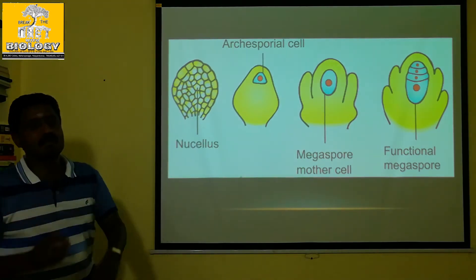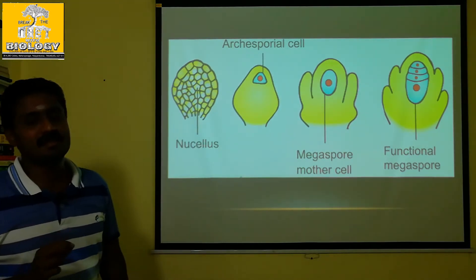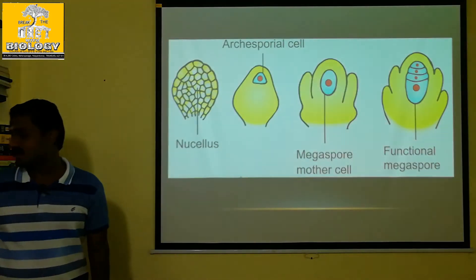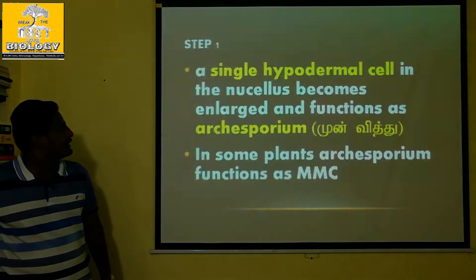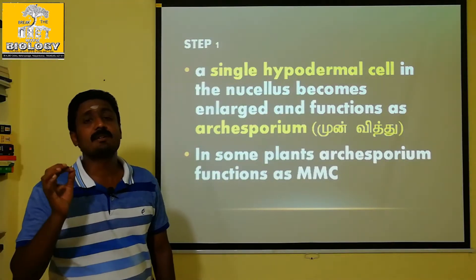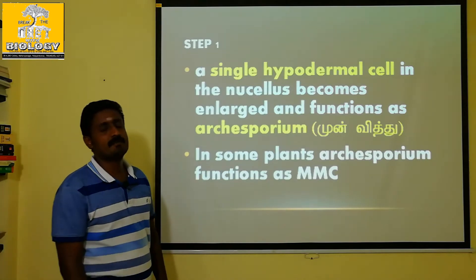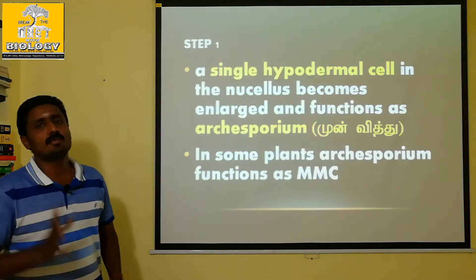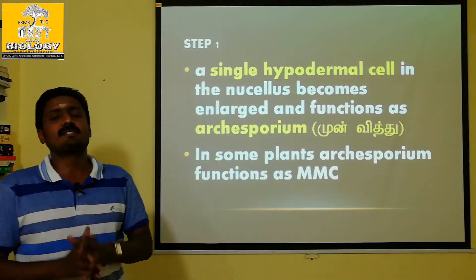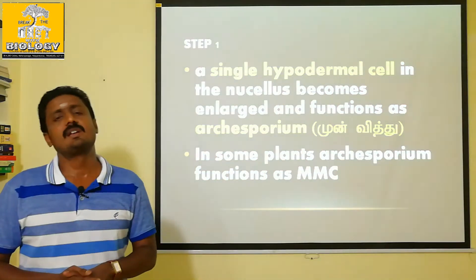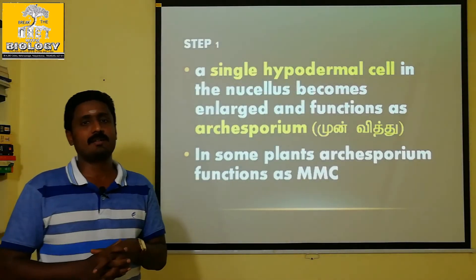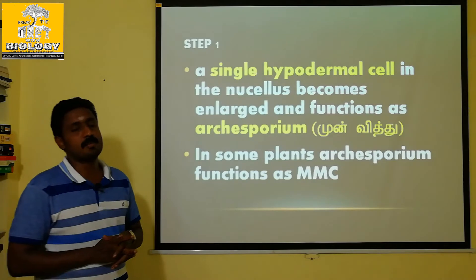Epidermal cells are in the outer region; the hypodermal region is just below, and that is where the Archesporium is formed. Step 1: the single hypodermal cell of the nucellus will have the ability to divide. That cell is called the Archesporium.